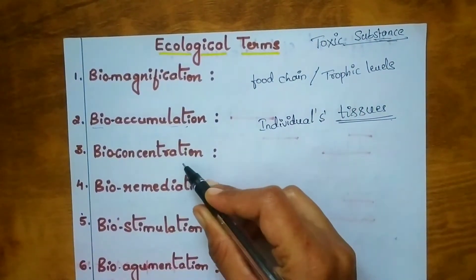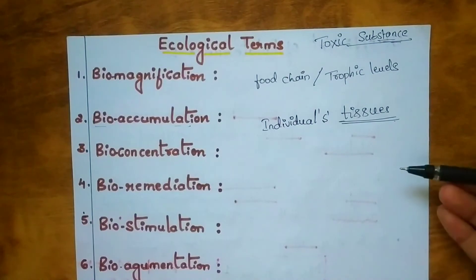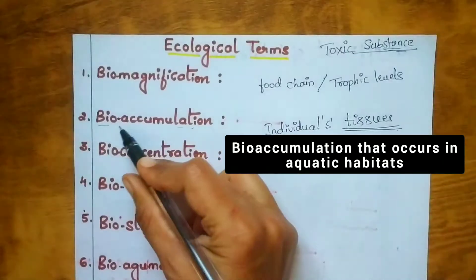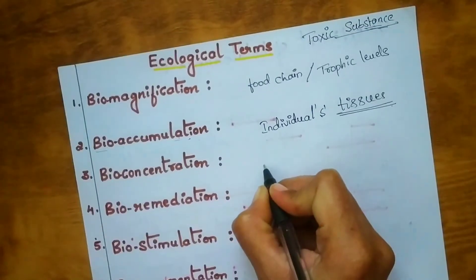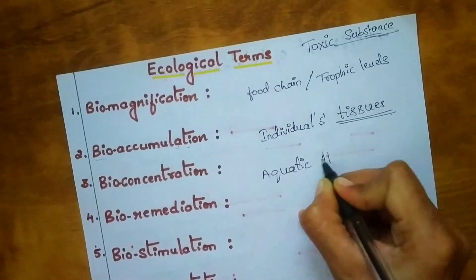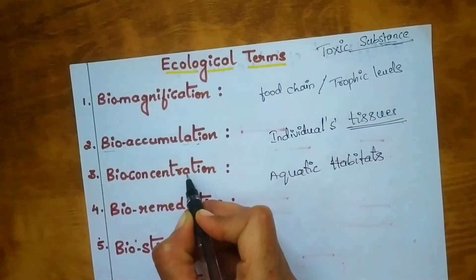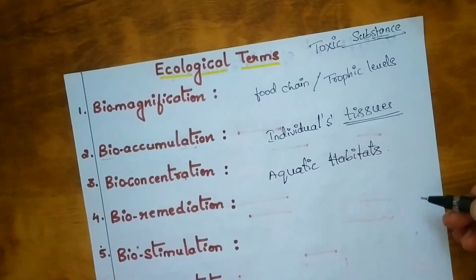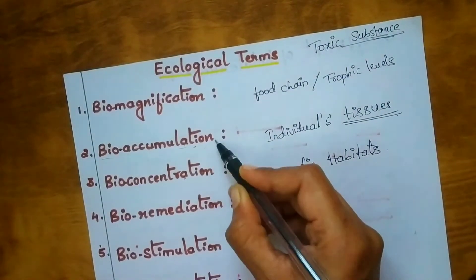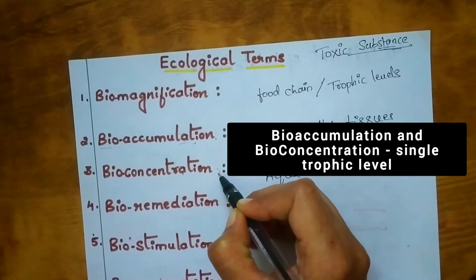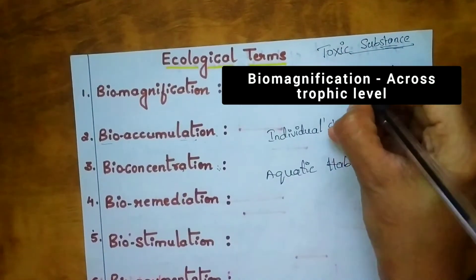The next term is bioconcentration. Bioconcentration is bioaccumulation that occurs in aquatic habitats. It occurs when the uptake of substances from water is greater than its release into the water. An important point to remember: bioaccumulation and bioconcentration occur in a single trophic level, whereas biomagnification occurs across multiple trophic levels.